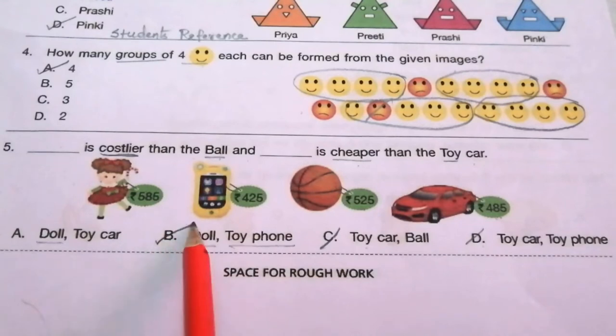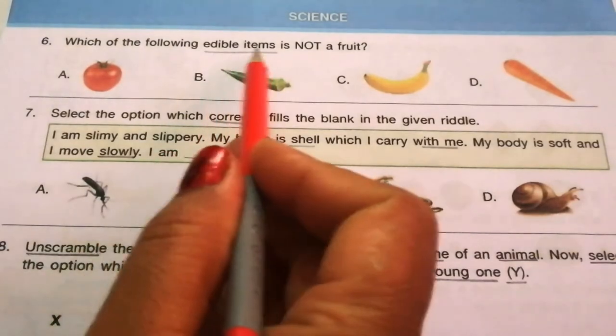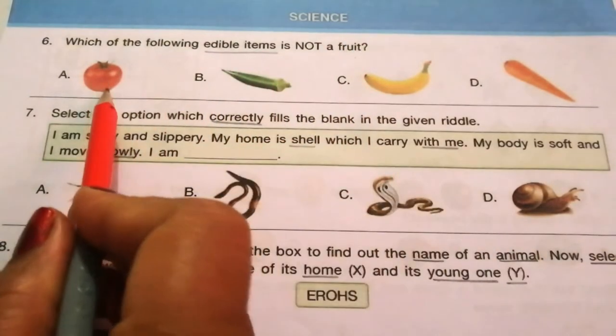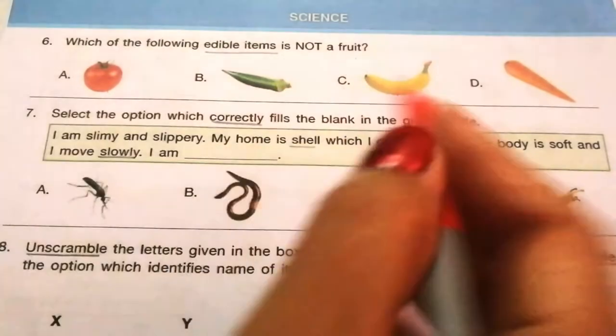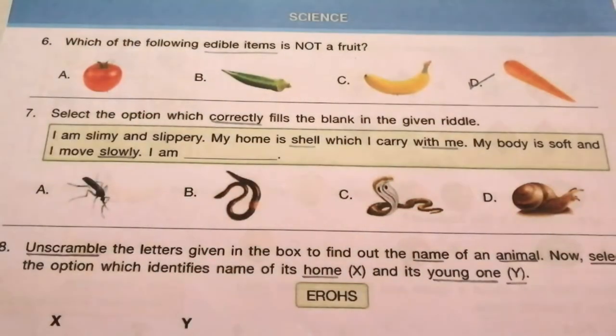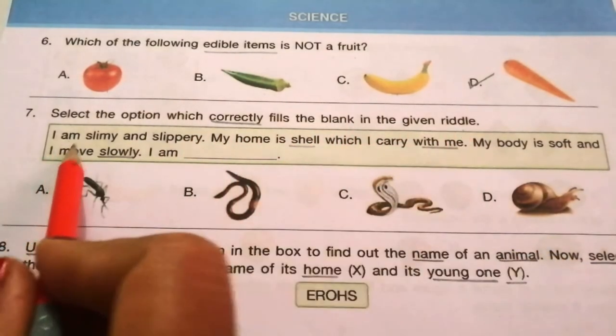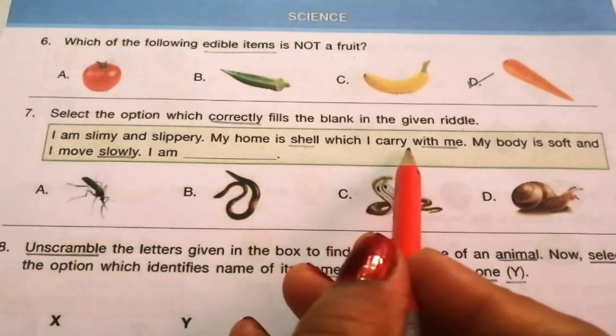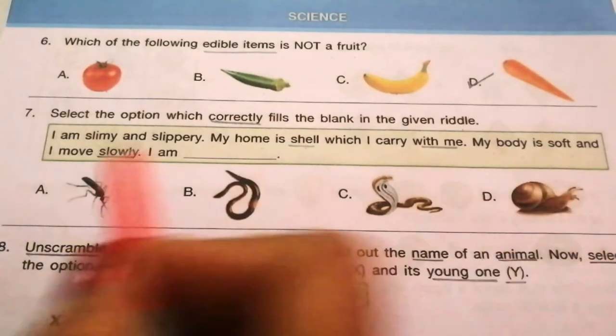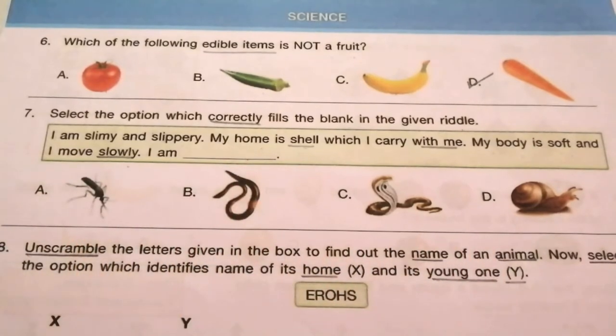Next topic is science. Question 6: Which of the following edible items is not a fruit? Tomato, lady's finger, banana, carrot. The answer is D, carrot. Question 7: Select the option which correctly fills the blank. I am slimy and slippery, my home is shell which I carry with me, my body is soft and I move slowly. I am... the answer is D, snail.